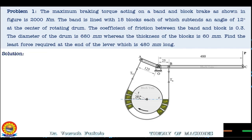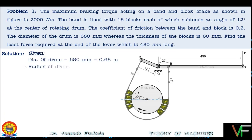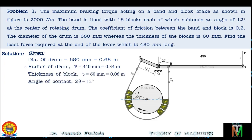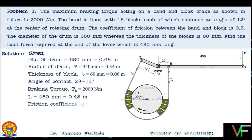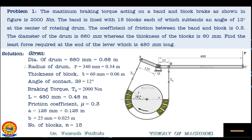The given parameters are: diameter of the drum is 680 mm, that is 0.68 m, therefore the radius of the drum is 0.34 m. Thickness of the block T is equal to 0.06 m. Angle of contact 2-theta is 12 degrees. Braking torque is given as 2000 Nm. Length L is 0.48 m. Friction coefficient mu is 0.3. Distance A is 0.125 m, distance B is 0.025 m, and the number of blocks is 15.